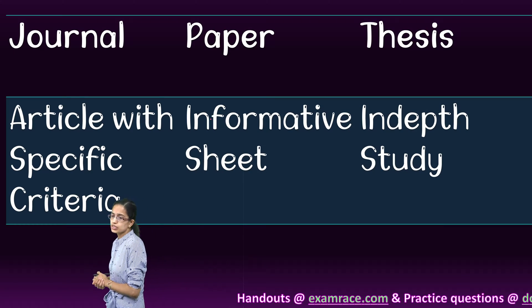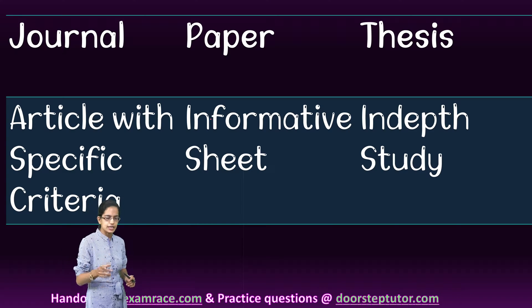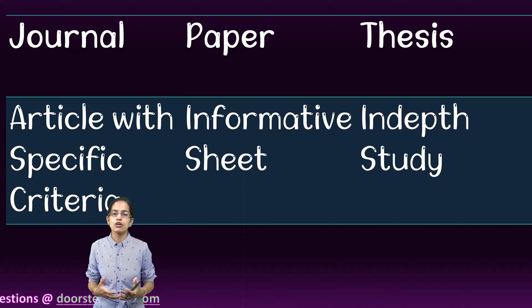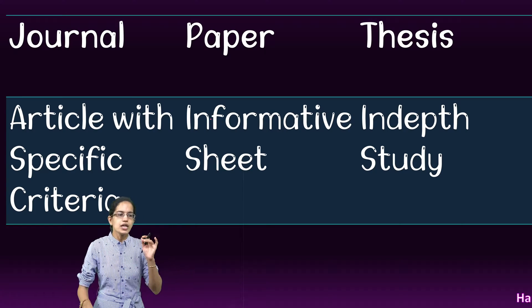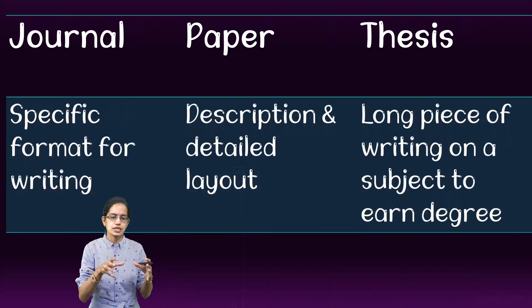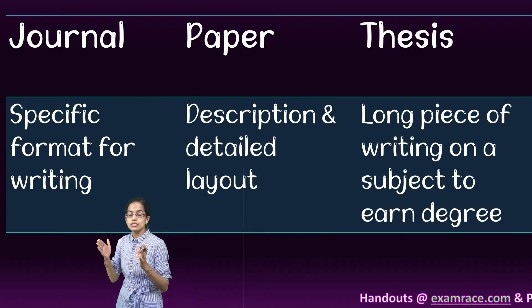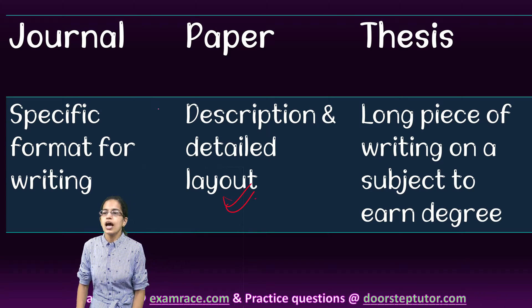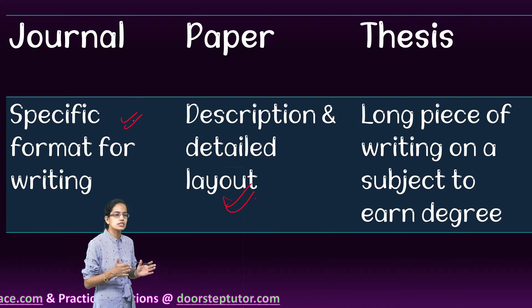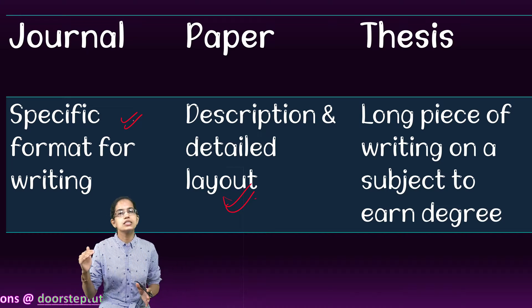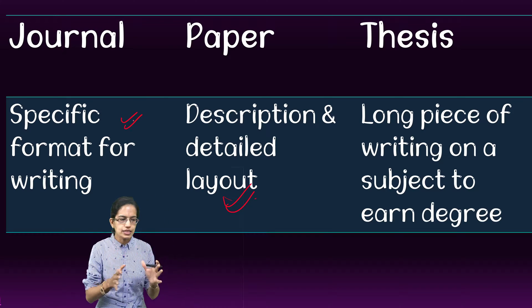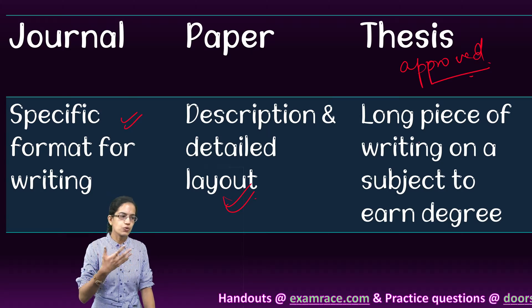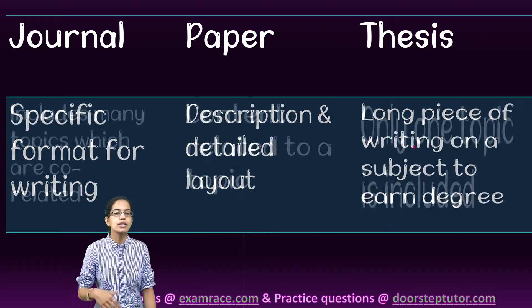Now, if you understand the difference between a journal paper and thesis — first, when we focus on a journal, it is an article which has certain specific criteria. Papers are usually part of a journal and these are informative sheets of paper. However, a thesis is an in-depth study about a single topic — a long, in-depth study aimed to earn a degree, and is much more detailed. A paper has a specific layout in which it has to be written, and these papers are specifically designed for journals, so there is specific formatting. The thesis document has to be an approved document under a supervisory control, with a supervisor guiding you through the process.